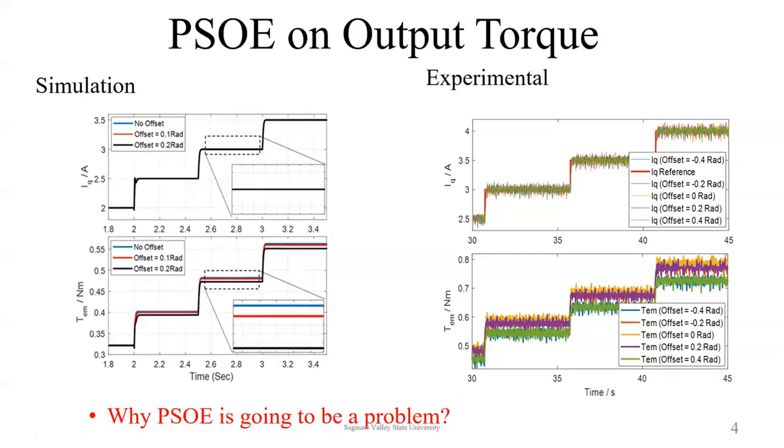Here we are showing you some results, one simulation and other experimental, where we experimentally injected position sensor offset error into the system. You can see that the torque is being degraded. Torque is reducing in both schemes. Like I mentioned, this could be a significant problem. When you want to accelerate, it stops accelerating or starts reversing if such a fault had occurred in the system.